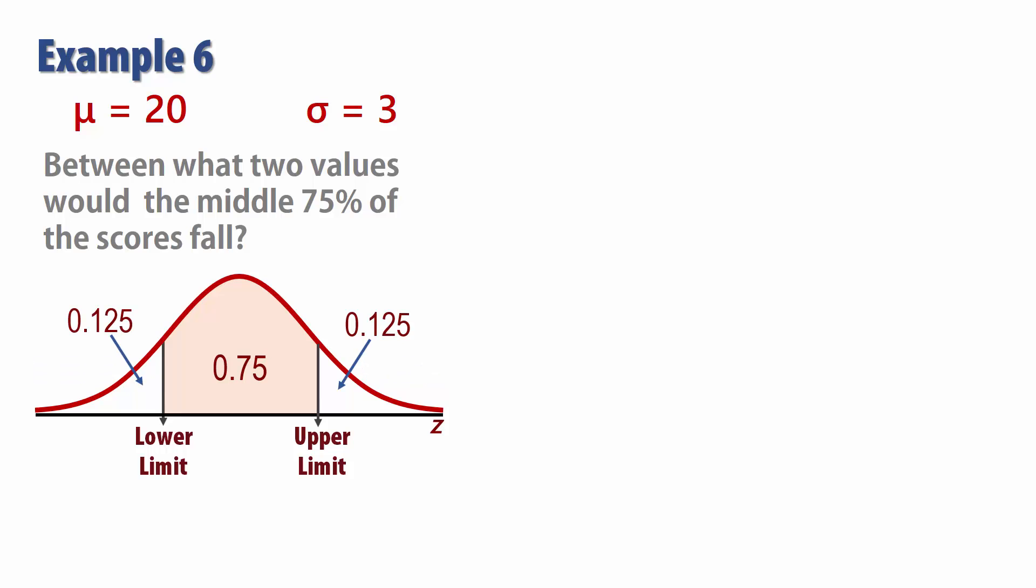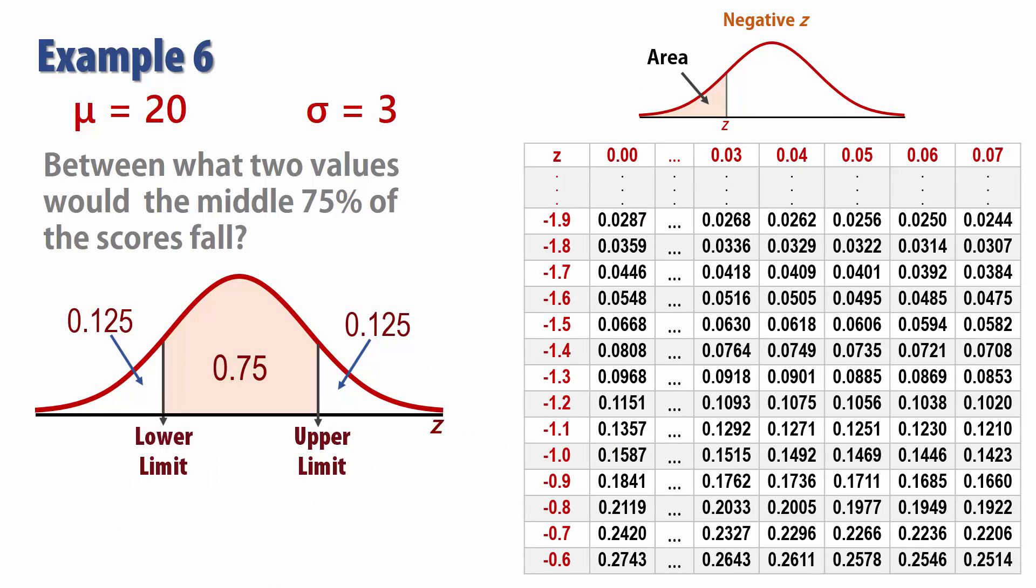For the lower limit, we go to the negative section of the tables and search for the closest to 0.125. The closest we find here is 0.1251, which corresponds to a Z score of negative 1.15.